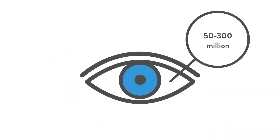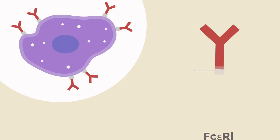In the eye, there are approximately 50 to 300 million mast cells. A lot of these will have specific IgEs bound to their surface. These IgEs are bound to the mast cells by something called the FcEpsilonR1 receptor. There are a few other receptors that these may be bound to, but we'll focus on the main one here.